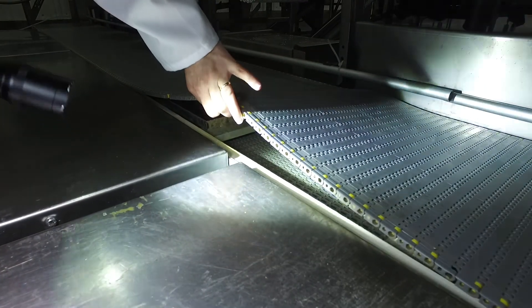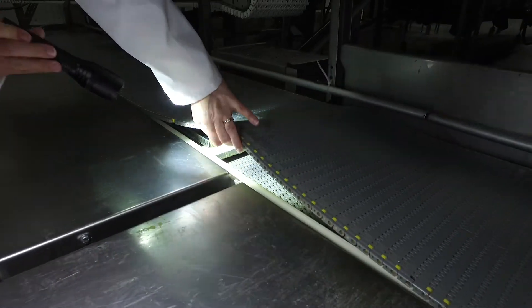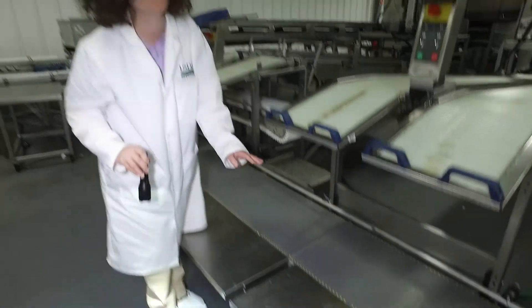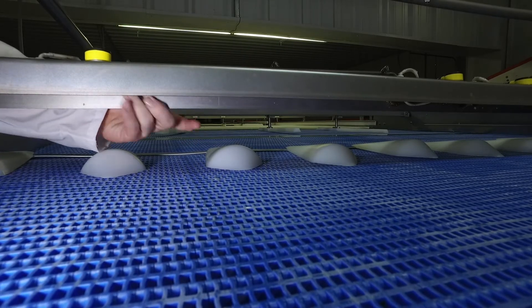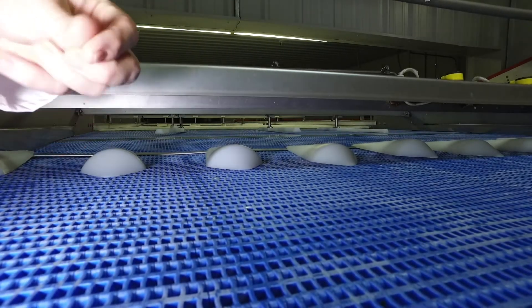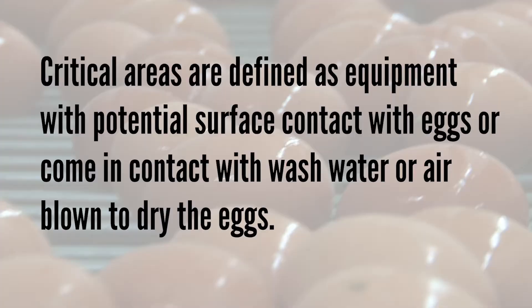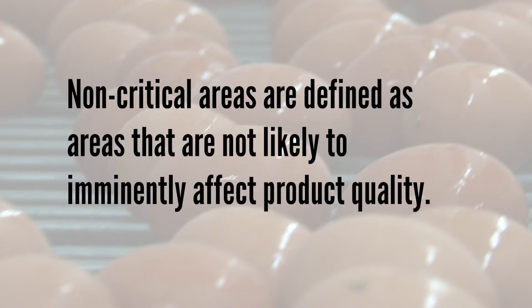So what is organoleptic inspection? Organoleptic inspection assessments include sight, smell, and touch. However, microbial growth will not always be seen, smelled, or felt. Critical areas are defined as equipment with potential surface contact with eggs or coming in contact with wash water or air blown to dry the eggs. Non-critical areas are defined as areas that are not likely to imminently affect product quality.